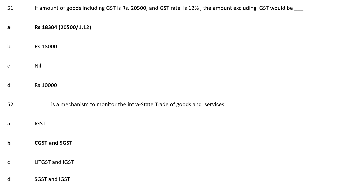Have you got it? You have to take the amount Rs 20,500 and divide it by 1.12 since the GST rate is 12%. And then you will get your answer 18,304. Just use your calculator, calculate it and then see your answer.